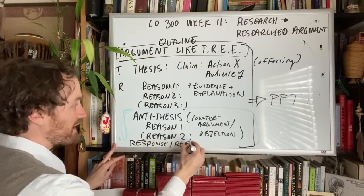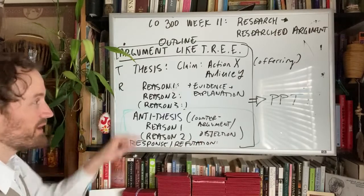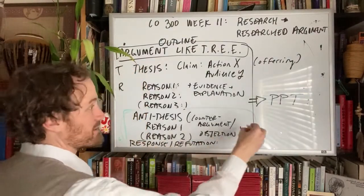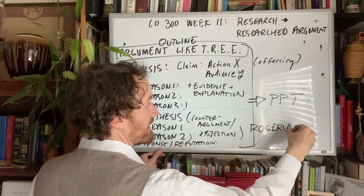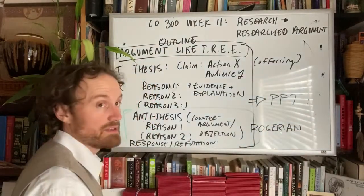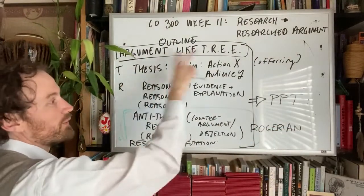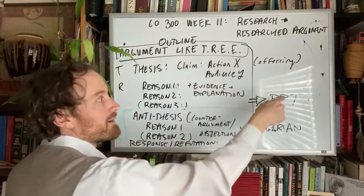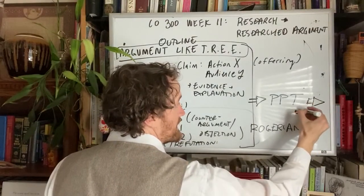This could be a refutation, but you don't necessarily need to prove them wrong. It's possible that you're both right, and that would be the Rogerian side of things, where you're really considering another perspective that's not yours. This is how to expand your research. Also filling out this, you're going to turn this outline into your PowerPoint, and then you're going to turn your PowerPoint into your essay.